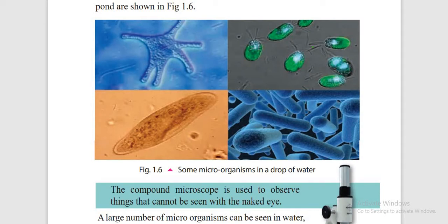Next is chlamydomonas. The shape of chlamydomonas is nearby similar to a cockroach. Next is paramecium, which has the shape of a slipper. And bacteria, which are in spherical, rod and many other shapes.